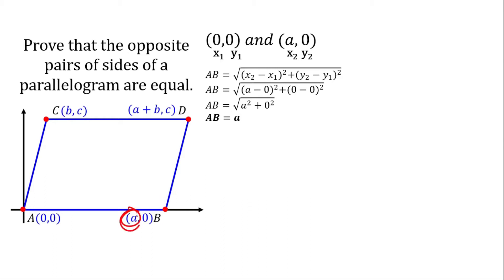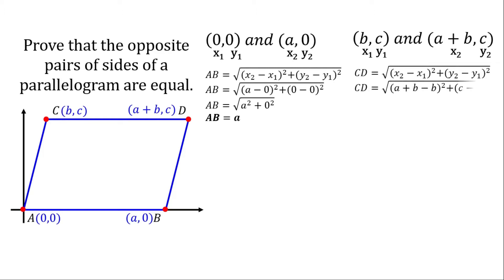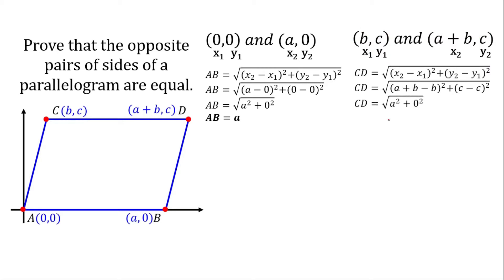We have the measurement for AB as A. It is evident because this coordinate dictates the length of this horizontal line. Now let's go to the second side, CD, which is opposite to AB. Using the distance formula and plugging in all given values: x sub 2 is A plus B minus B, and y sub 2 is C. So C minus C equals 0, and A plus B minus B equals A. That gives us A as the length of this side.